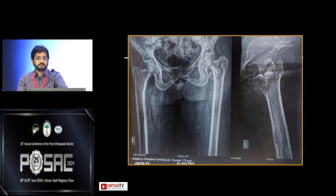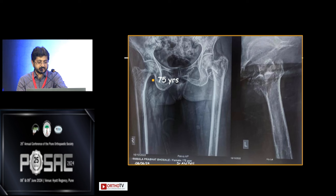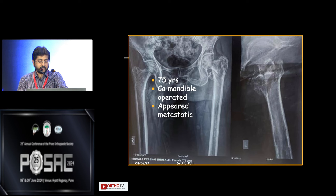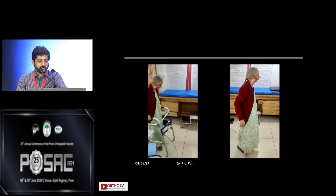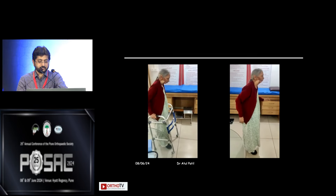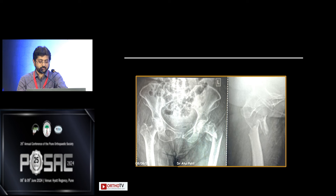Another patient — a 75-year-old lady with a very basal neck fracture. On lateral hip X-ray, one might consider replacement. However, she had a mandibular lesion appearing metastatic, but MRI showed no metastases and biopsy was negative. She was not replaced — the fracture was properly fixed, she was mobilized immediately post-op and started walking normally.